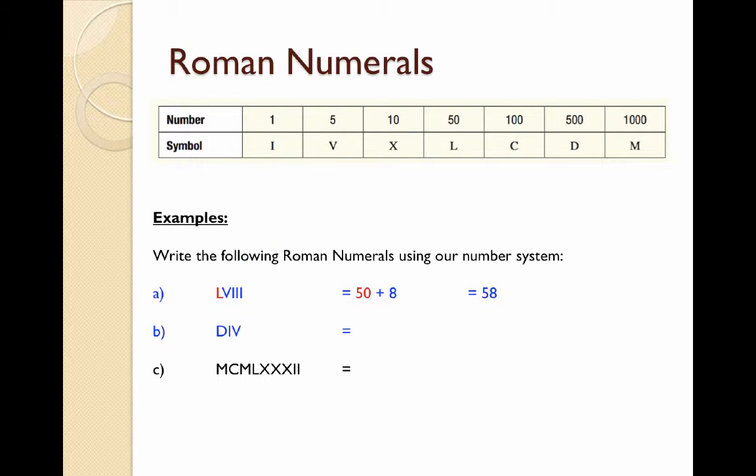Question B we say DIV. The D stands for 500. With the I after it I don't have to worry about any subtraction, so I'm just going to write down 500. Then I have a combination of I and V, but this time the I is before the V which means that a small numeral is before a larger one. Now I'm going to have to subtract. 1 away from 5 is 4, making our number 504.